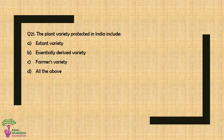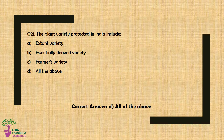Question No. 21: The plant varieties protected in India include — Option A: Extant Variety, Option B: Essentially Derived Variety, Option C: Farmers' Variety, or Option D: All of the above. The correct answer is Option D — All of the above.